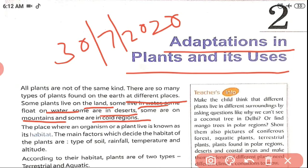The place where an organism — whether it may be a human being, plant, or animal — which place suits for them to live is known as its habitat. The main factors which decide the habitat of plants are type of soil, rainfall, temperature, and altitude. Plants depend on these factors.